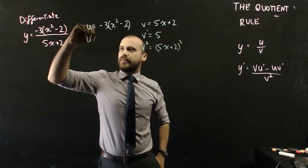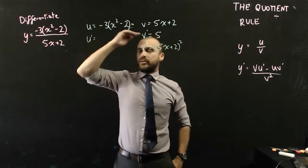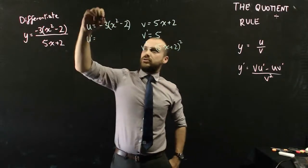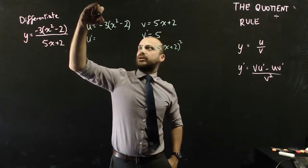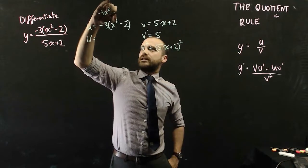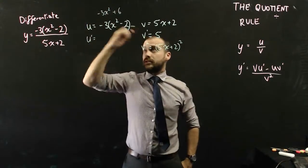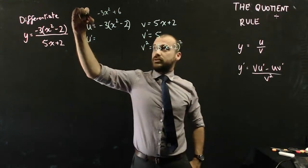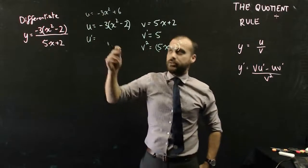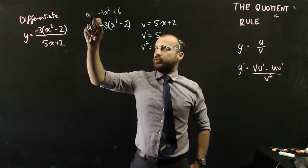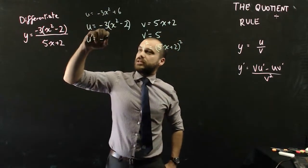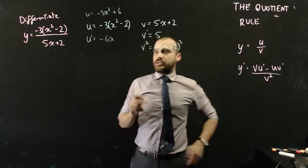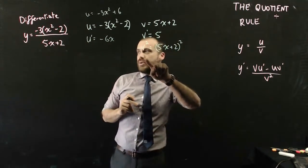Lastly, I need u dash. Now, have a little think about this. u is actually more like, make sure I don't run out of space here, negative 3x squared plus 6. I've just expanded that. That's u still. It's just another way to write it, but this one's easier. The derivative of u is going to be negative 6x. All right, so now I have u, u dash, v, v dash, and v squared.